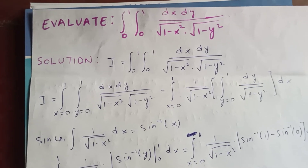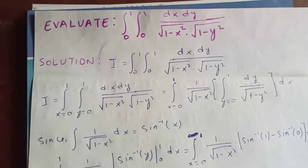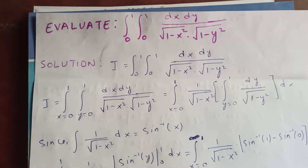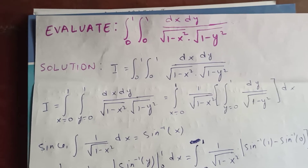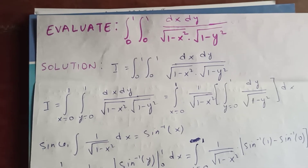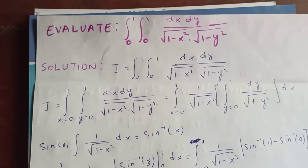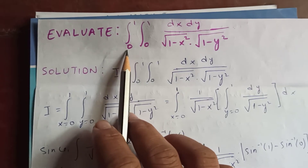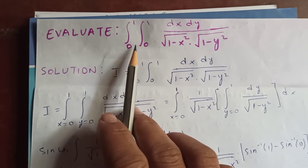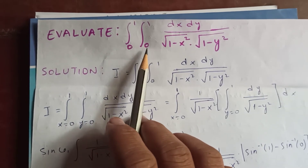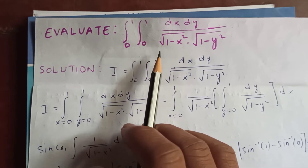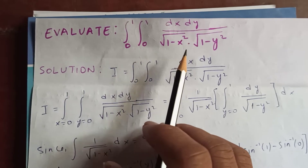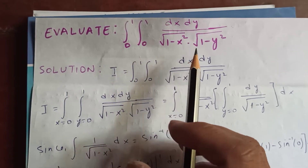Thanks for watching my video today. Let's calculate this interesting integral. We will evaluate the double integral from 0 to 1 and 0 to 1, dx dy divided by the square root of 1 minus x squared into the square root of 1 minus y squared.